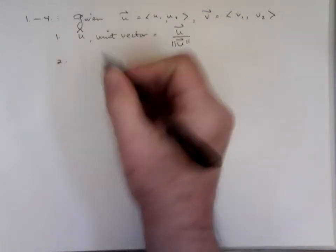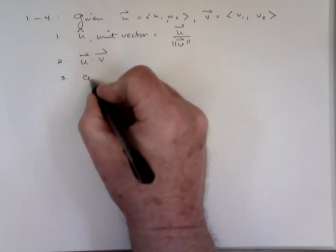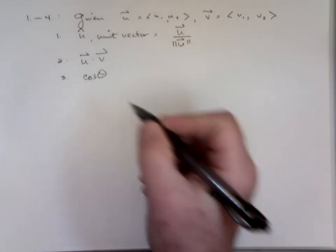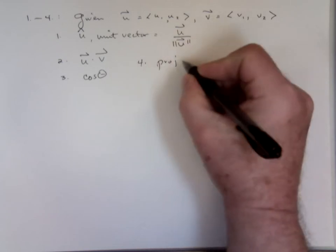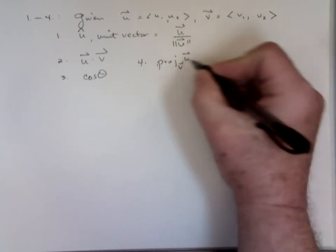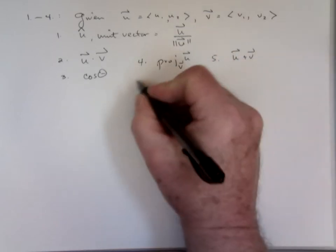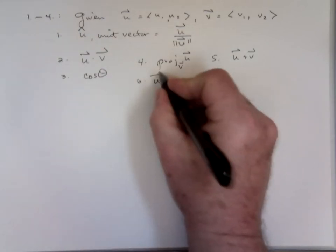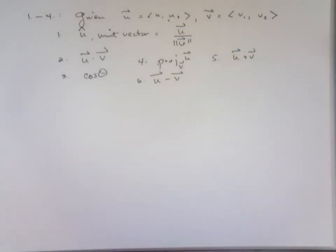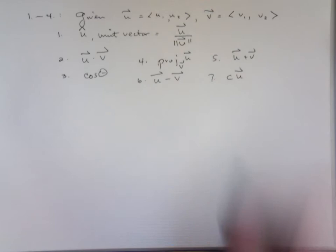I'm going to ask for the cosine of the angle between the two. I'm going to ask for projection of u on v. I'm going to ask for the sum of the two. Any one of these are possible in this section. This is fundamental stuff. And I could ask for a constant times one of those vectors.